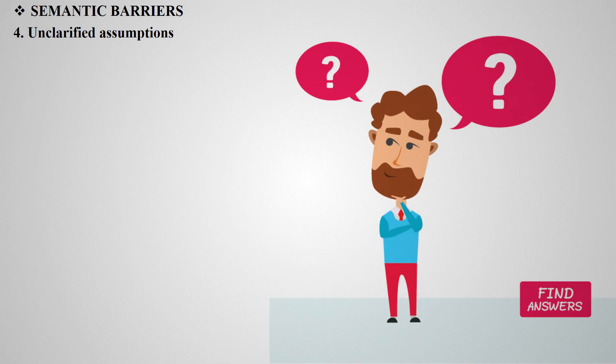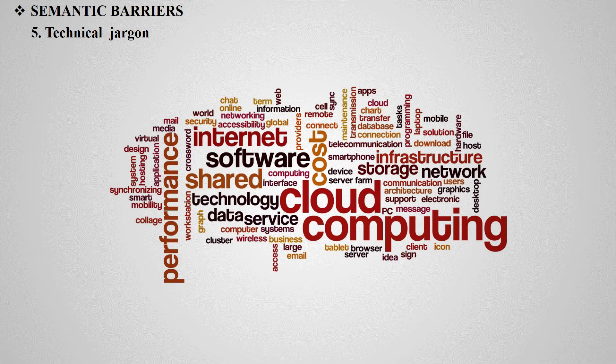The next semantic barrier is unclarified assumption. Sometimes communication may have certain assumptions which lead to different understandings. For example, a boss may instruct his subordinate to 'take care of his guest,' meaning transport, food, and accommodation. But the subordinate may only think of taking the guest to a hotel. Such common misunderstandings can cause problems.